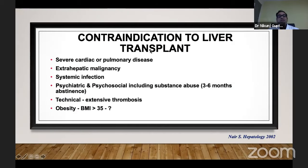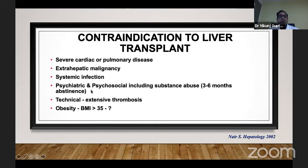What are the contraindications to liver transplant? These are severe cardiac or pulmonary diseases, extra-hepatic malignancy such as when malignancy goes beyond the liver and is outside Milan's criteria, systemic infection, psychiatric and psychosocial substance abuse — with three to six months of abstinence required worldwide. Extensive thrombosis is more or less a surgical contraindication, and obesity with BMI more than 35, although I put a question mark because GDLT can still be a choice in morbidly obese patients.